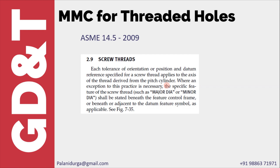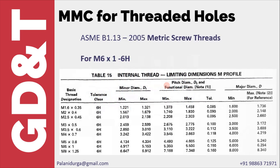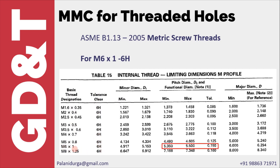Second, for threads, knowing what the tolerance is is very important. For metric screw threads — since this is M6, it is a metric screw thread — we have to refer to ASME B1.13-2005. That standard gives details about standard threaded sizes with pitch and tolerance class. For M6 x 1 pitch diameter, the minimum size, maximum size, and tolerance (the difference between the two) are specified in the table.